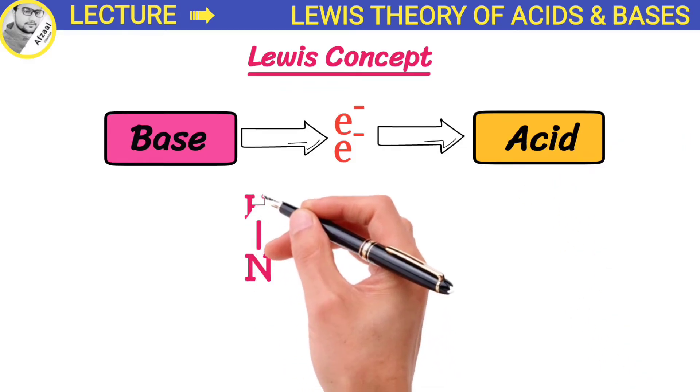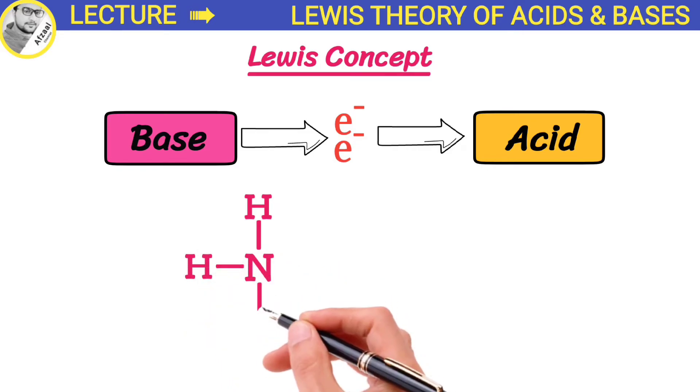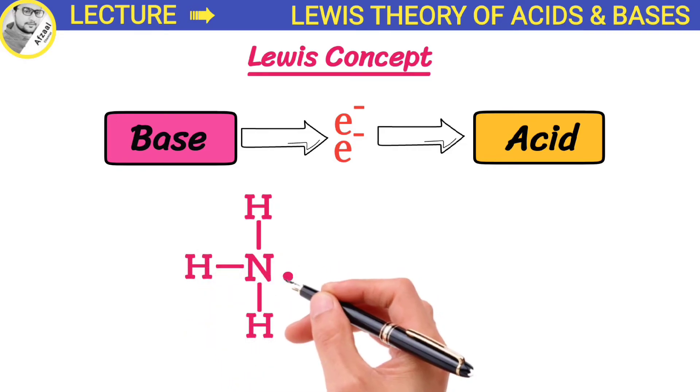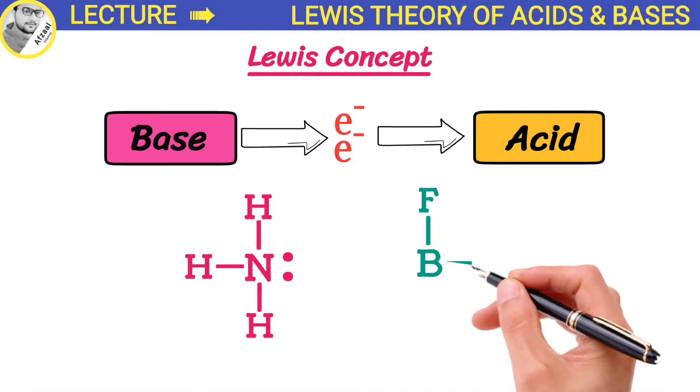To make things clearer, let's take an example. Imagine ammonia, which is our base. It has a lone pair of electrons that it can donate. On the other hand, we have boron trifluoride. It has an incomplete orbital that can accept a pair of electrons.